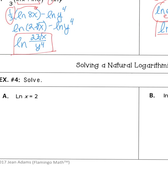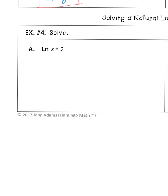For question four, part a, we solve by converting to exponential form. The base is e, so we have e squared equals x. Using your calculator, x is approximately equal to 7.389.